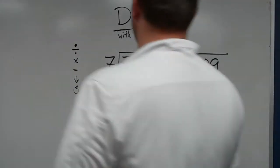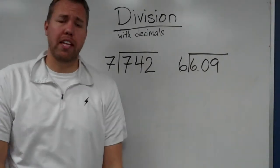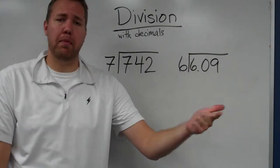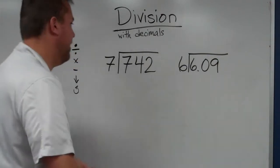When we get into division with decimals, long division with decimals, we're not changing the algorithm. It's still daddy divides, mommy multiplies, sister subtracts, brother brings down, Rufus repeats. We still follow that exact same thing.